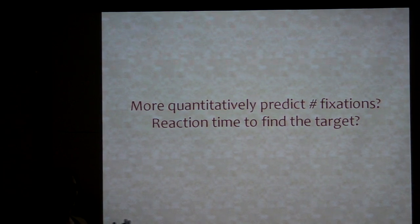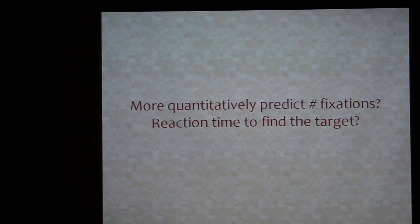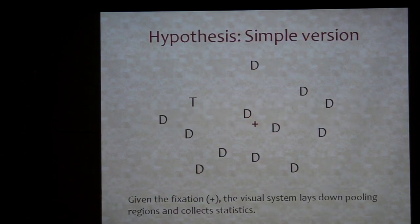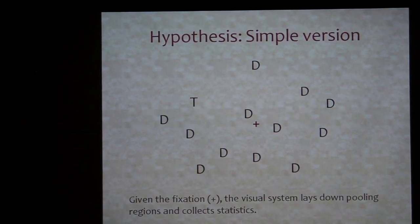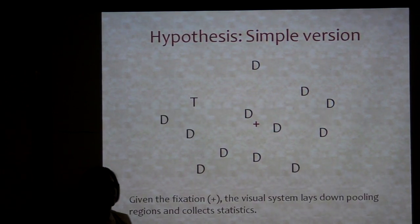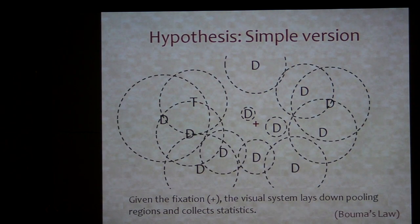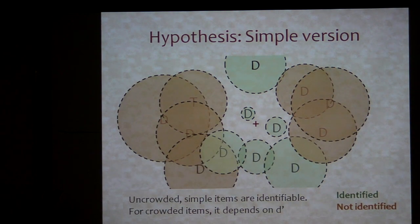Another thing that's kind of cool here is you can actually even more quantitatively try and predict search, which has really not been done for this kind of display — trying to predict reaction time, number of fixations, and so on. The simple version is: you start at some fixation, you lay down pooling regions. Based on those pooling regions, some items are simply resolved — if they're simple items you just know whether they're a target or a distractor. Other pooling regions are crowded and you can't tell what's there.